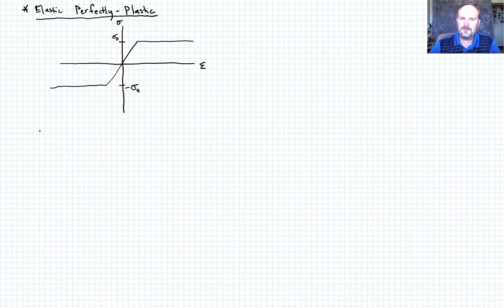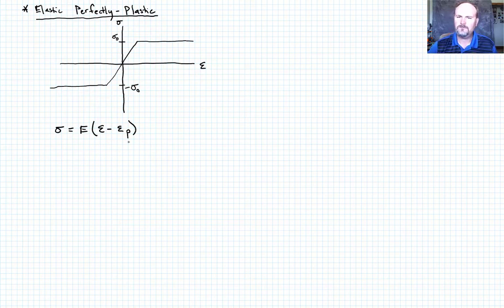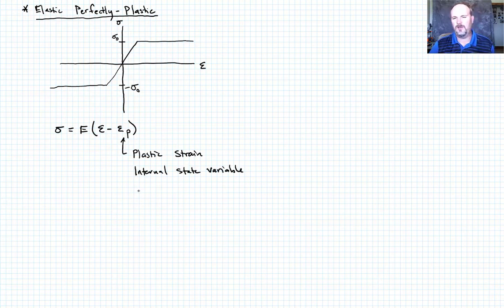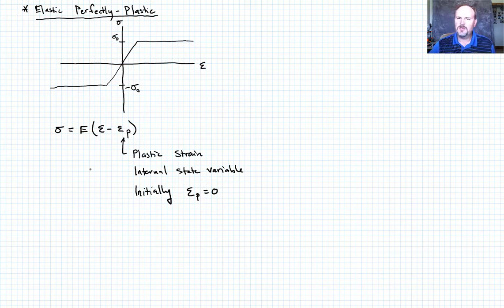In general, when inside the linear elastic region the material obeys Hooke's law. Similar to what we did with eigenstrains, we subtract the plastic strain from the total strain. In the simplest form: sigma equals E (Young's modulus) times (epsilon minus epsilon_P), where epsilon_P is the plastic strain. It's an internal state variable, and initially we define the plastic strain to be zero.